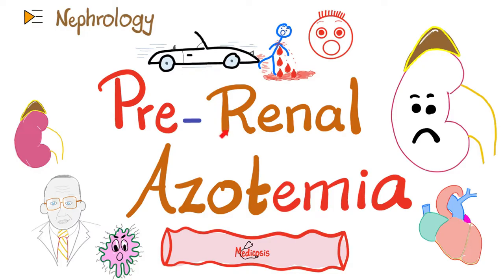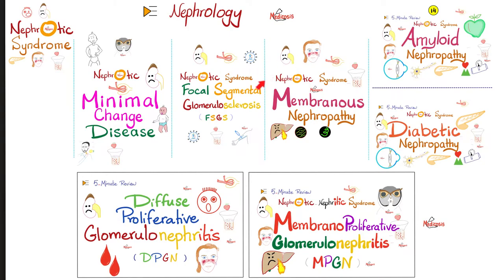Acute renal failure has three types and three stages: pre-renal — the problem is before the kidney; renal or intrarenal — the problem is inside the kidney; or post-renal — the problem started after the kidney. Look at this uremic facies, and you might find uremic frosting on the skin.